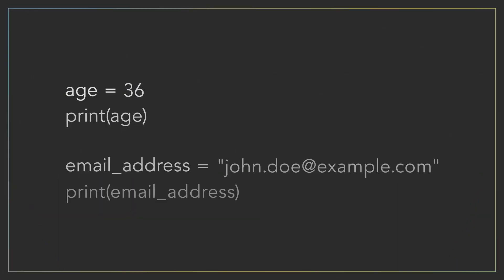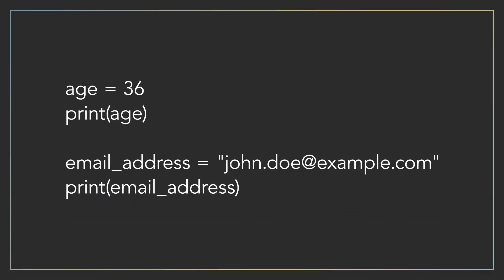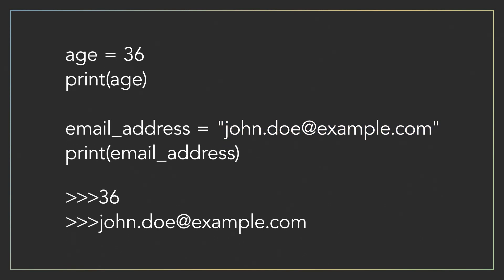Let's look at another example. This time, we've created a variable named email_address, and we've assigned it the following value: john.doe@example.com. If we run this program, we can see that the values of our variables are printed out. Now, even though we've created both of these variables by giving them a name, there's something different about the value that we assigned them. With the first value, we are only using numbers, and for the second value, we have double quotes with letters and symbols inside.